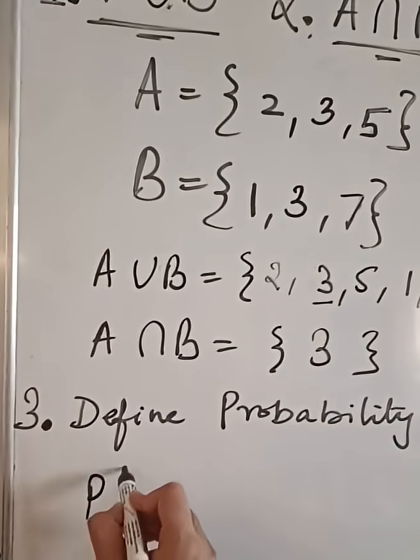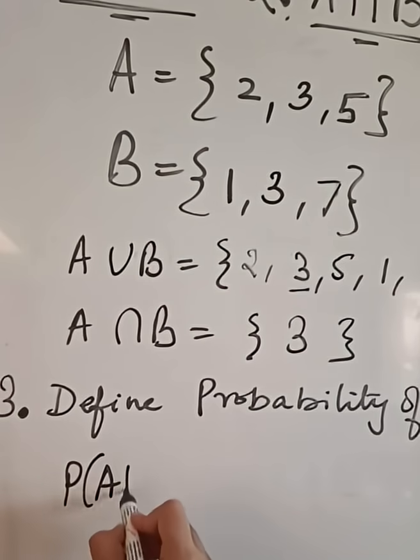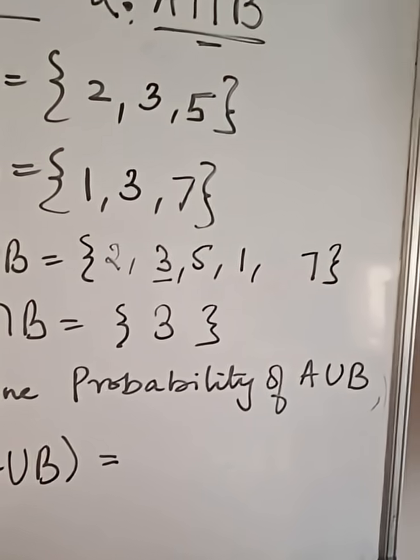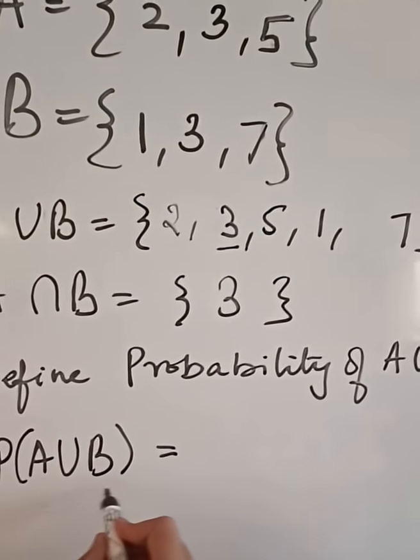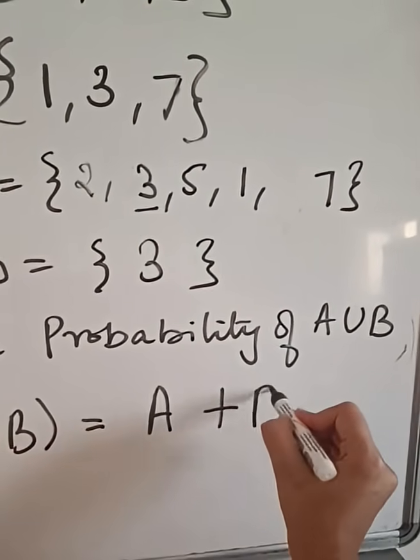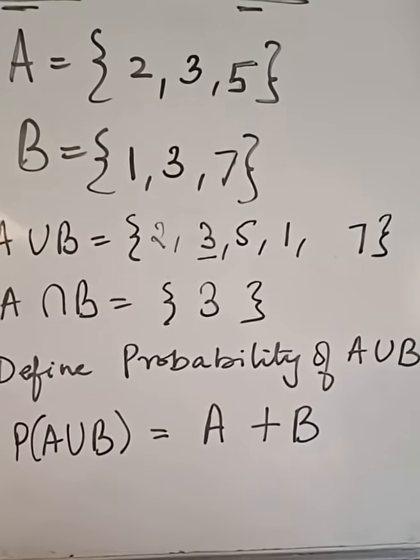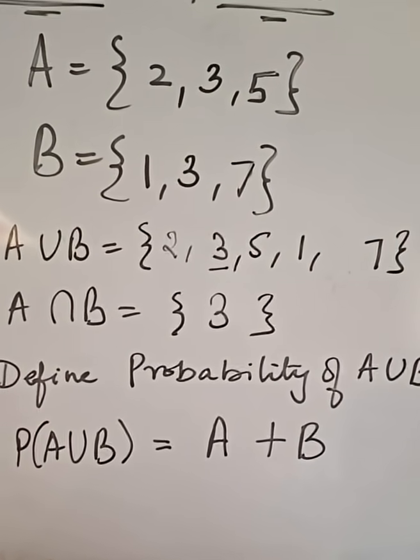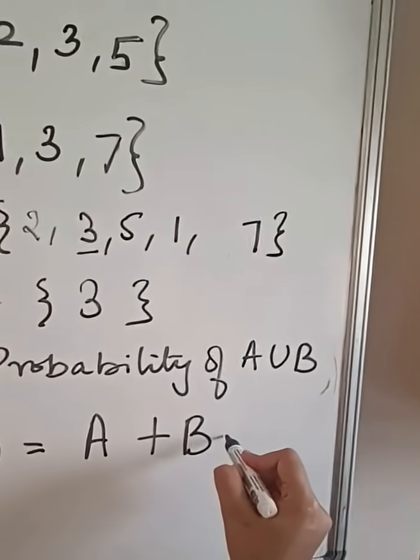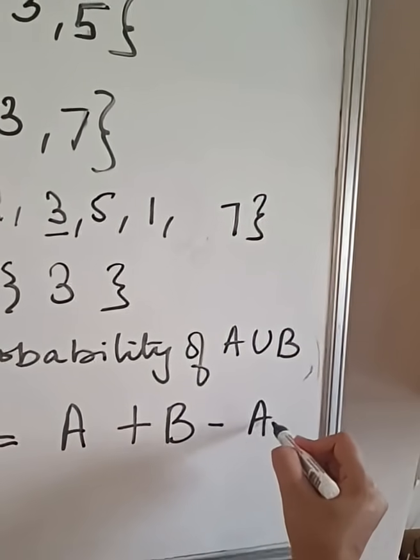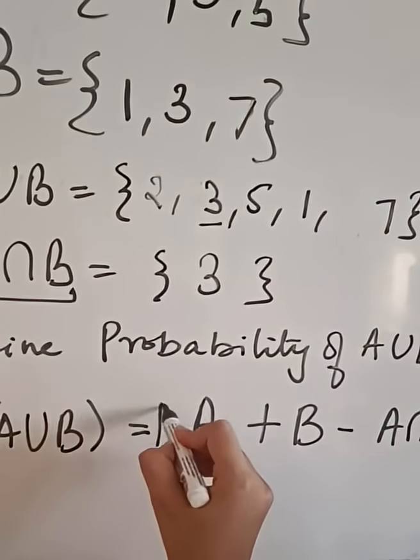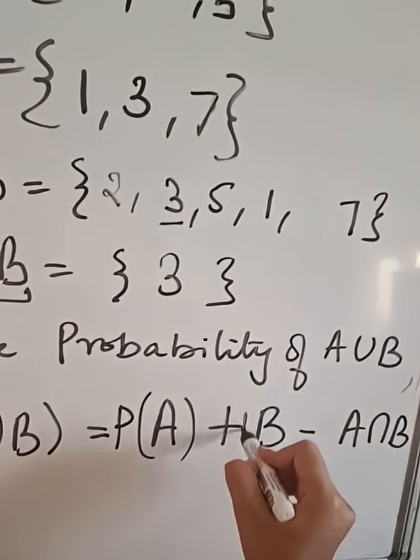It is defined as probability of A union B and as we saw in the above example, in A union B we included all the elements of A, then we included all the elements of B and we removed the common elements and common elements are part of A intersection B. So, that means we removed A intersection B and to define the formula we have to find probability.